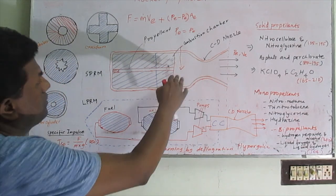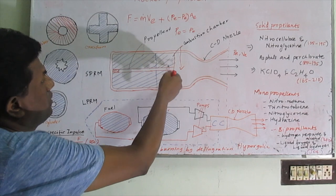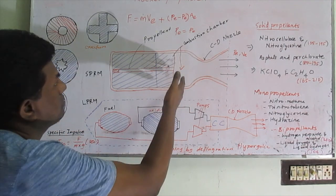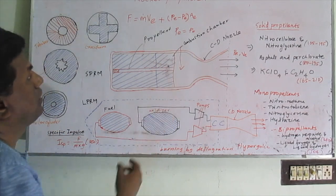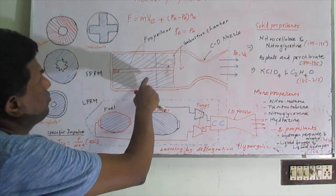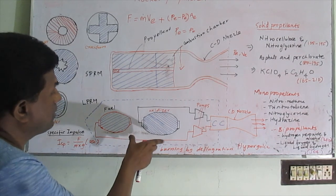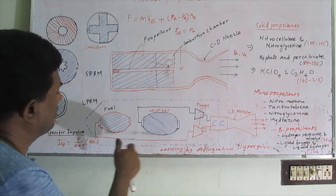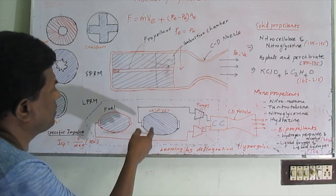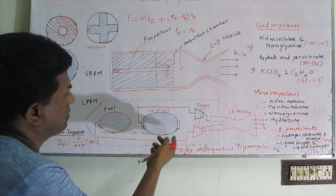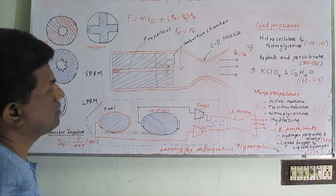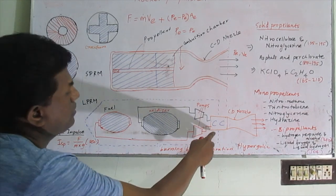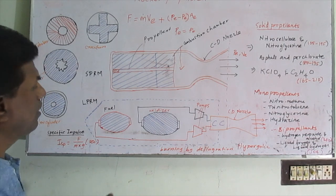In a solid propellant motor, the combustion chamber stores the propellant directly — more propellant stored means more thrust produced. In a liquid propellant motor, the combustion chamber can be smaller because the fuels and oxidizers are stored separately, which is a main advantage of liquid propellant rocket motors.